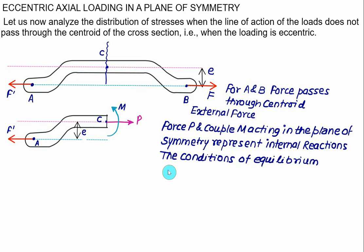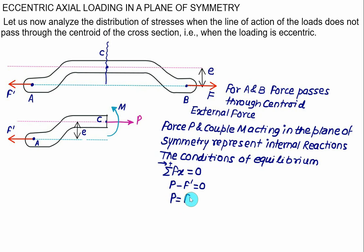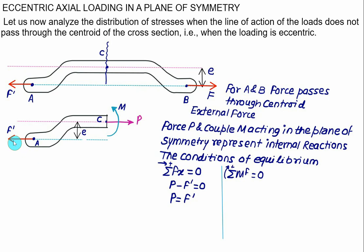Applying the first equilibrium condition — summation of Fx = 0, with rightward positive — P is positive and F prime is negative, so P minus F prime = 0. Therefore the internal force P equals the external force F prime. There is no force in the y direction, but a couple is acting, so we take the sum of moments equal to zero, with clockwise as positive.